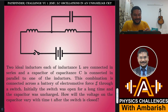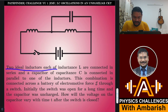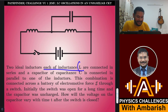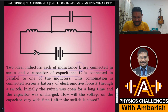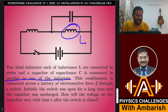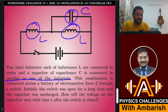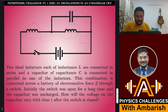So let's look at the problem: two ideal inductors each of inductance L are connected in series, and a capacitor of capacitance C is connected in parallel to one of the inductors. This inductor has inductance L, this inductor has inductance L, and this has capacitance C.